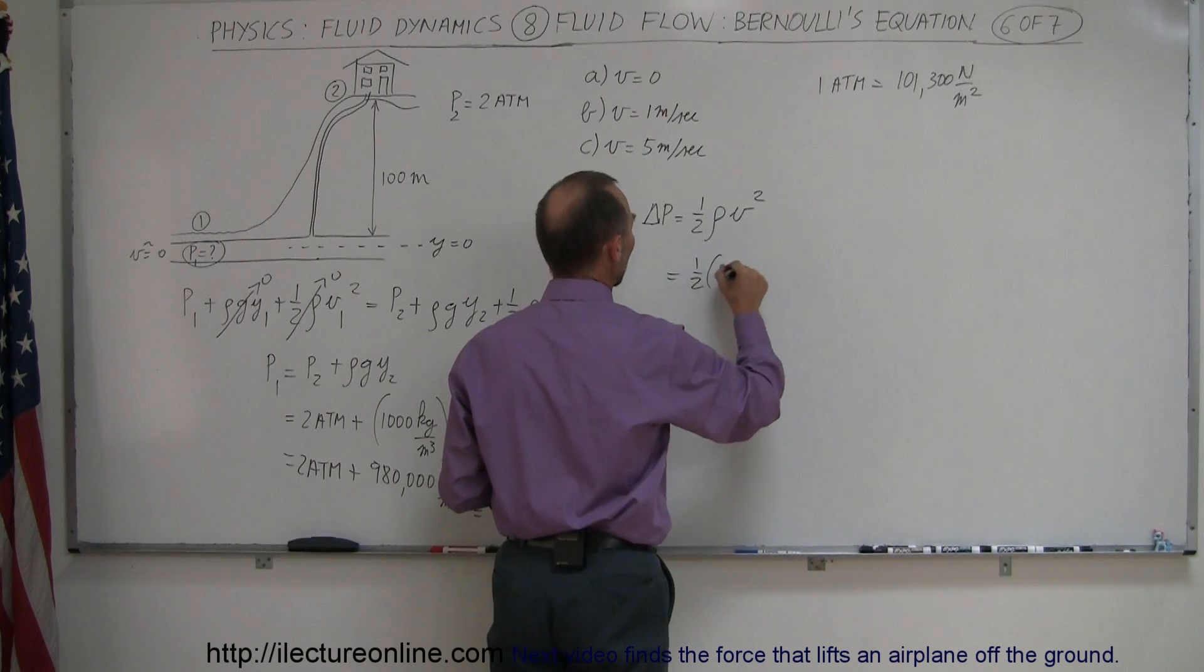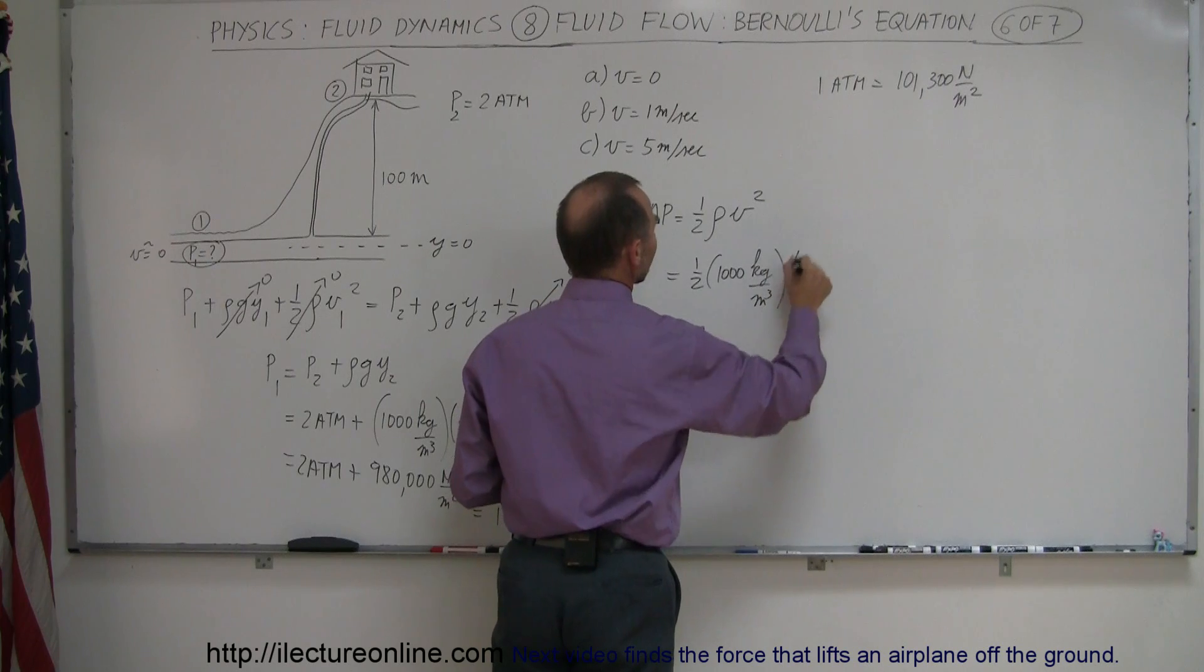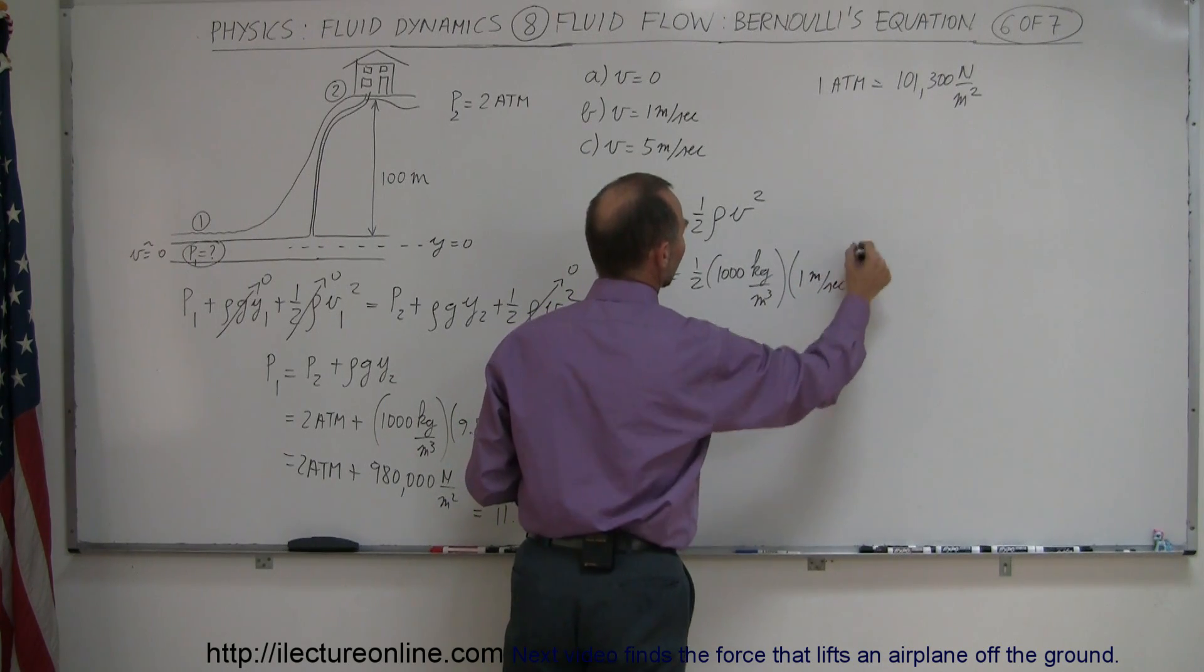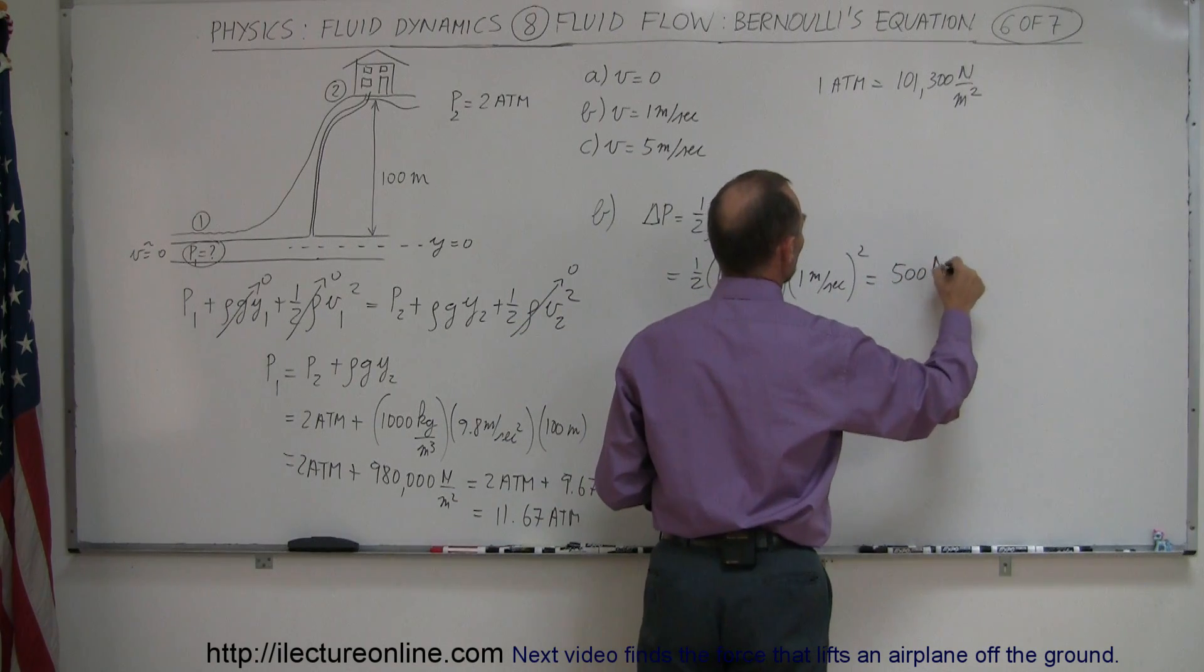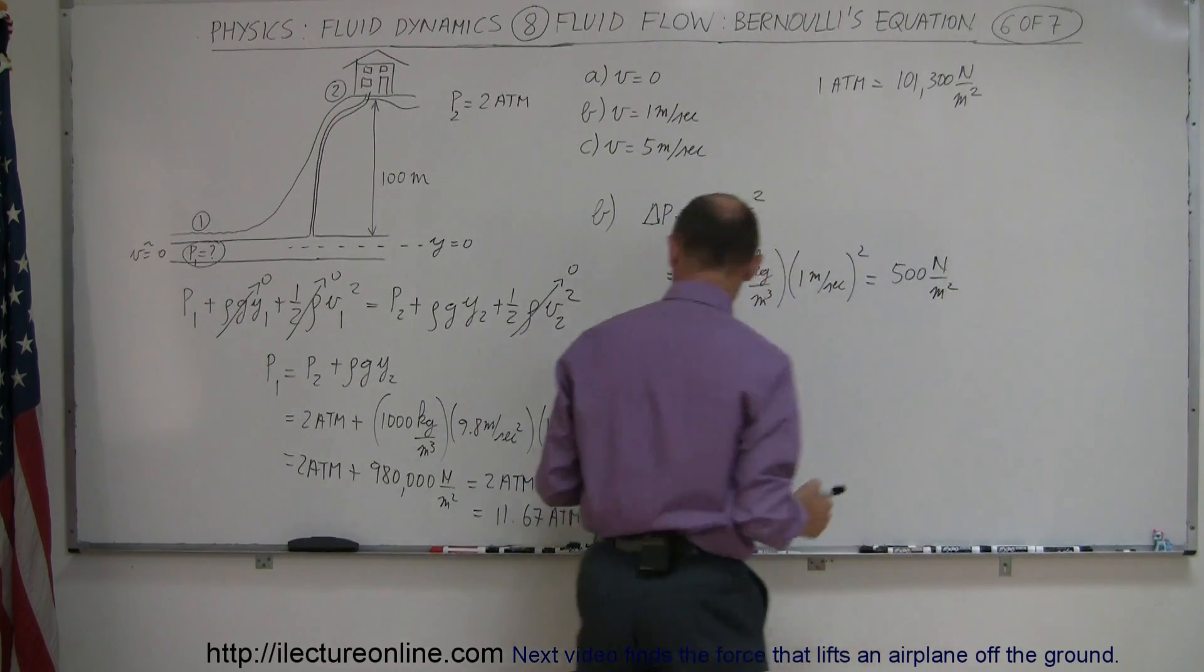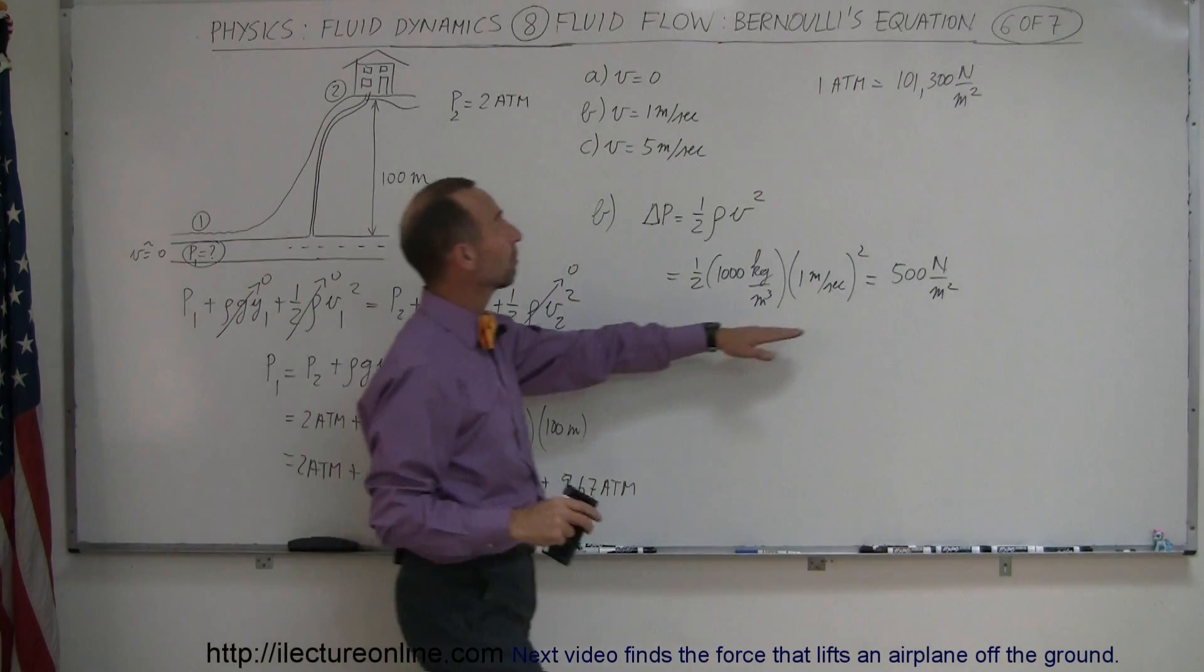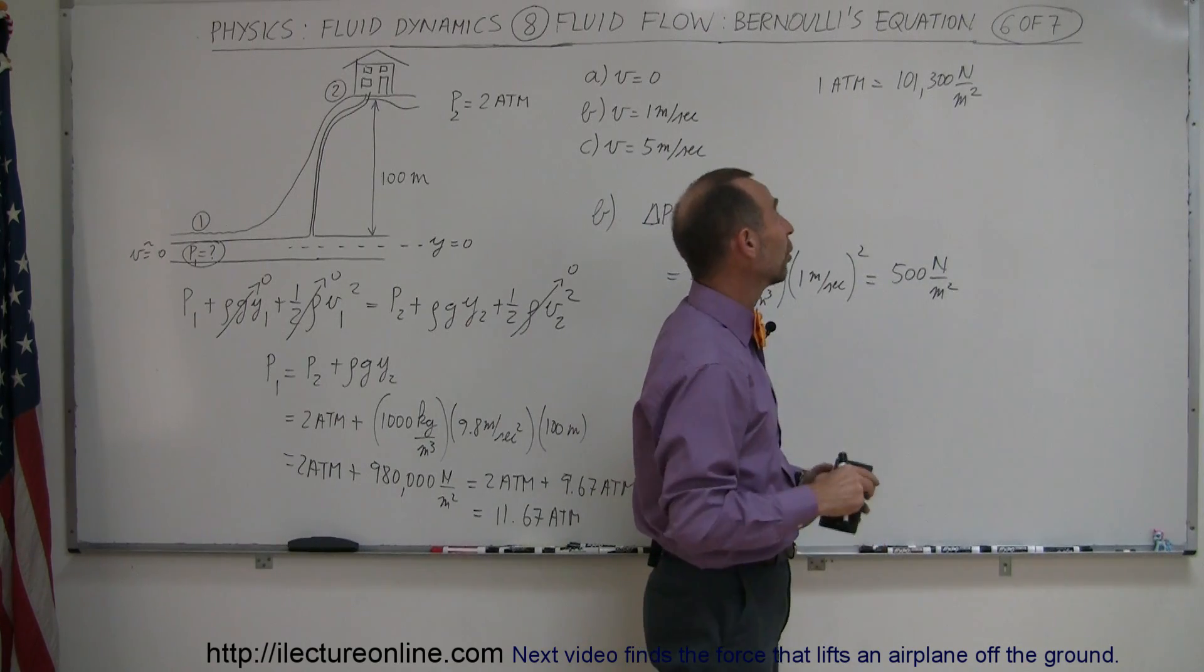So this is 1.5 times 1,000 kilograms per cubic meter times velocity, which is one meter per second, and we have to square that, and so that would give us 500 newtons per square meter. Now 500 newtons per square meter is actually a very small amount compared to atmospheric pressure, so you can see that would not make a whole lot of difference.